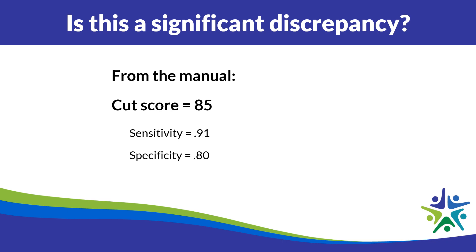The manual states a cut score of 85, with a sensitivity of 91 and specificity of 80. There's been a fair amount written about this and some criticisms, but in general, a 65 is well below an 85, and at that level it already had good sensitivity — so this is very likely a significant discrepancy. I also like to use the general rubric that DPI provides for interpreting different tests and triangulating data.